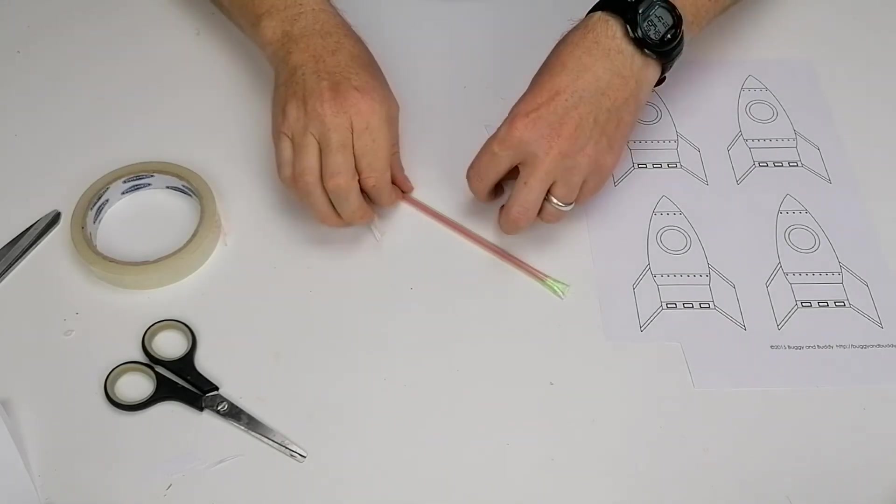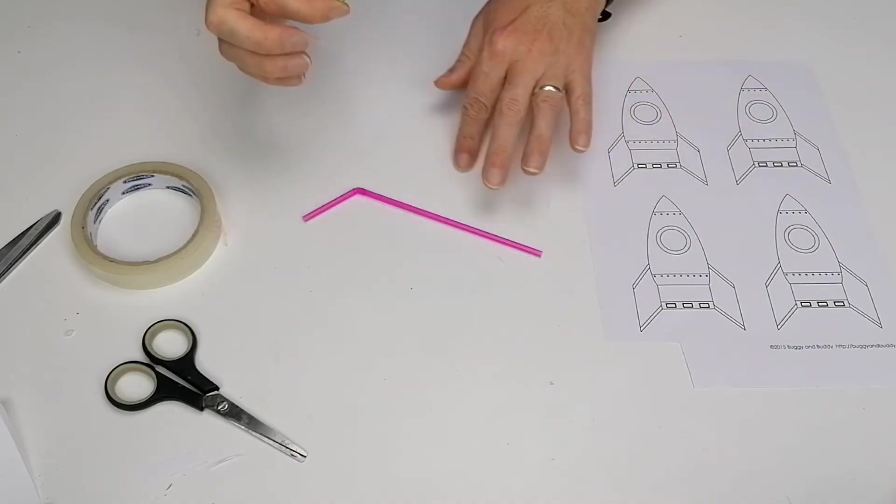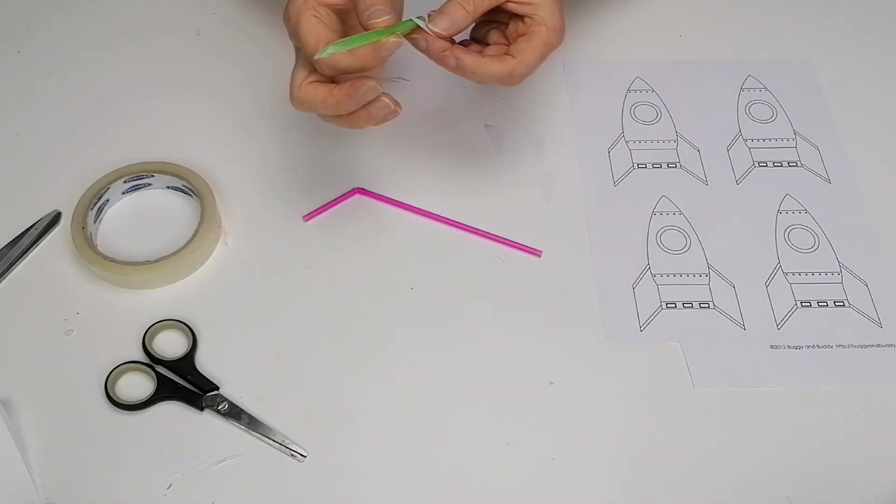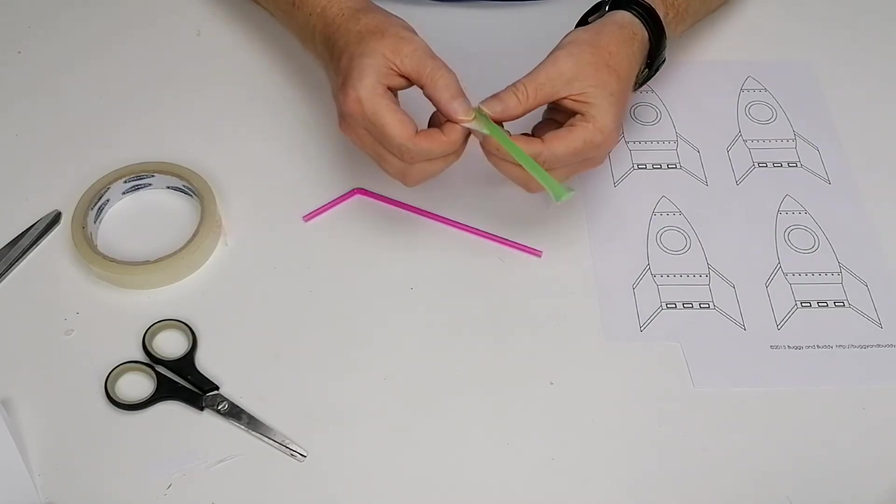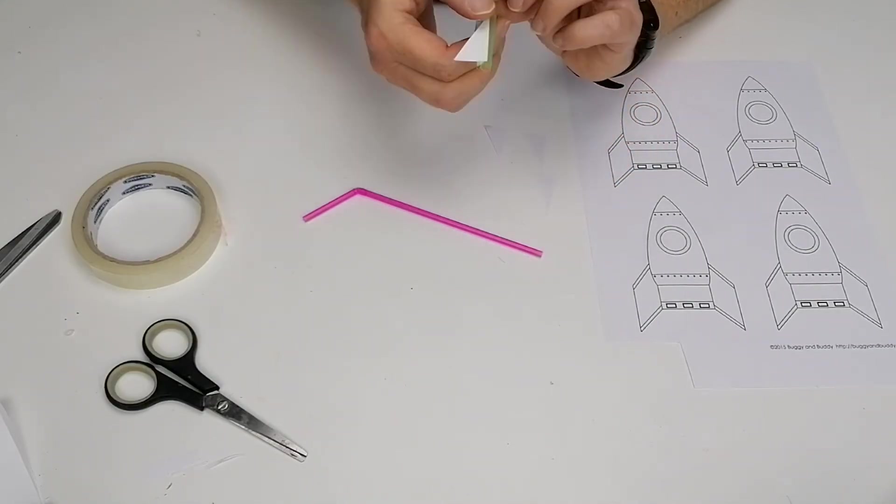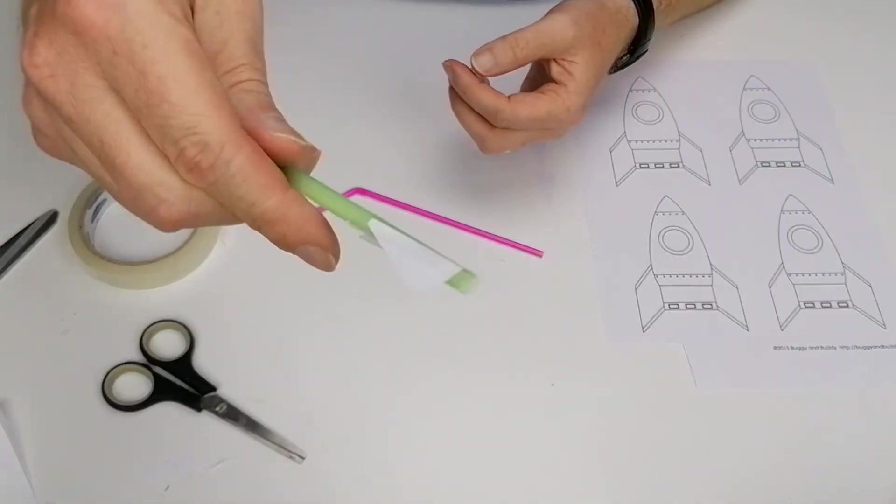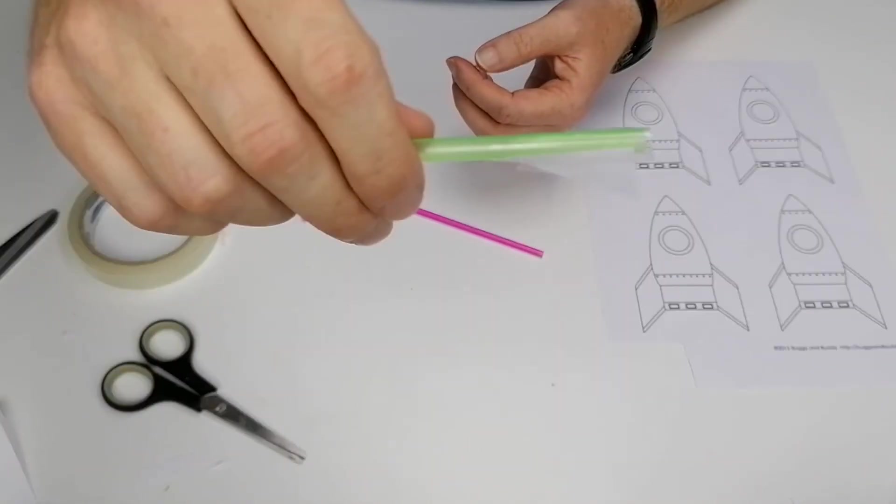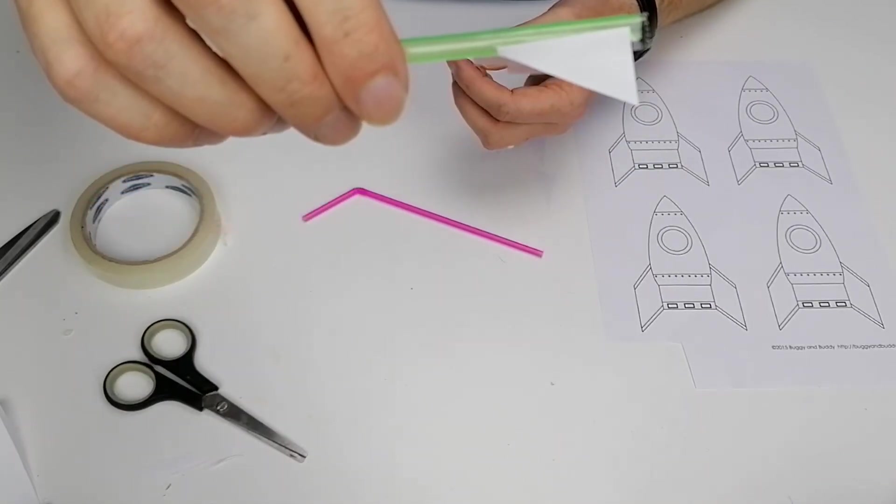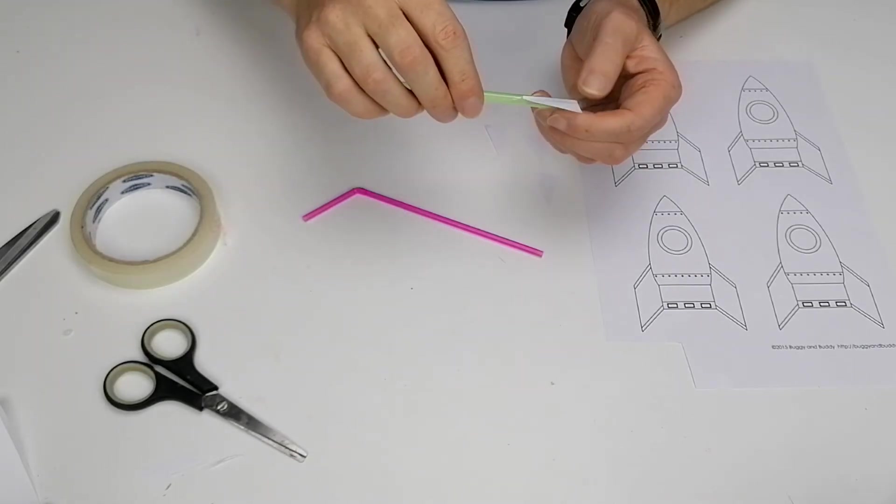To put the fins on, you take the rocket and put your fin to the side of it, put a little bit of tape on that. And then another bit of tape on the other side. Once you get up to four fins, it does get a little bit tricky because you don't have very much space to put them on there. So that's one fin on there. I usually just leave it at two fins, but if you want, you can go for four.